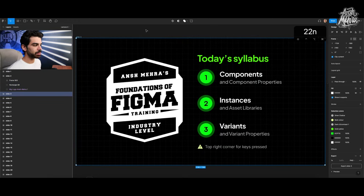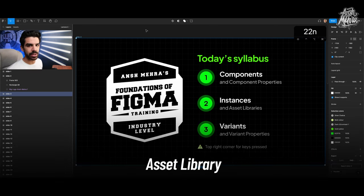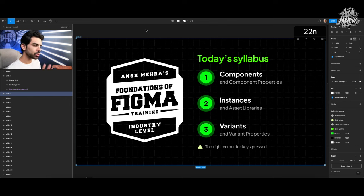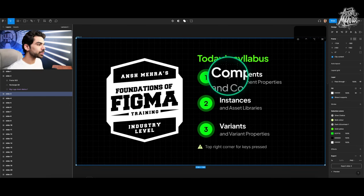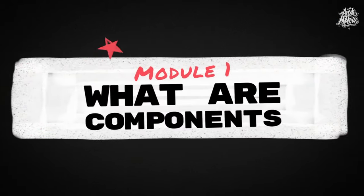Today's syllabus is split into 3 modules. In module 1, we'll understand what exactly are components and component properties. In module 2, I'll show you what instances are and how they are declared for asset libraries — basically a group of components and buttons you can export and use from one file to another. In module 3, we will cover variants and variant properties. Throughout the session, I will zoom in my cursor when focusing on something, and you can see my key presses in the top right corner.